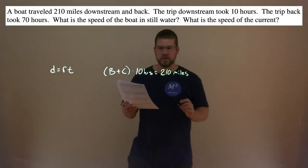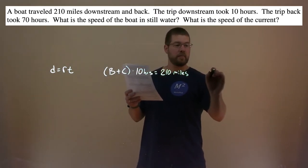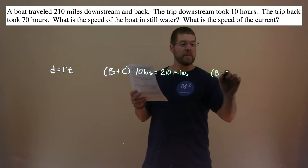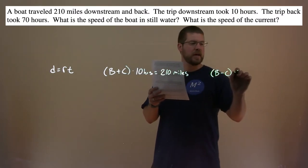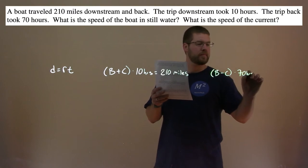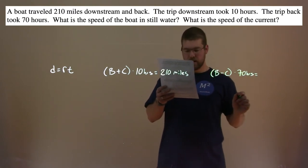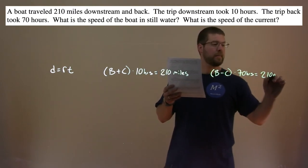The second equation, they tell us here, is that the trip back, so the trip back would be the speed of the boat minus the current, because now they're going against the current, took 70 hours. And that, again, it's 210 miles.